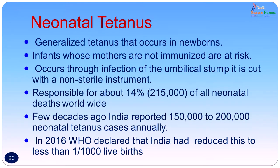Neonatal tetanus: generalized tetanus occurs in the newborn. Infants whose mothers are not immunized are at risk. It occurs through infection of the umbilical stump cut with non-sterile instruments or through application of cow dung to the stump. It was responsible for about 14% of all neonatal deaths worldwide. India previously reported 1.5 to 2 lakh neonatal tetanus cases annually, but in 2016 the WHO declared India had reduced incidence to less than 1 per 1000 live births.